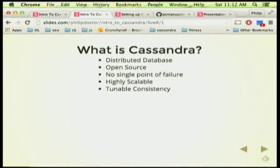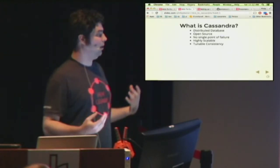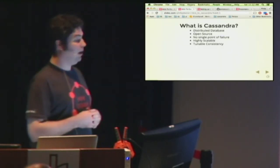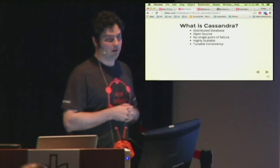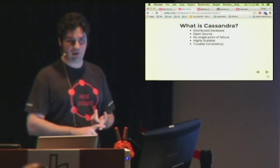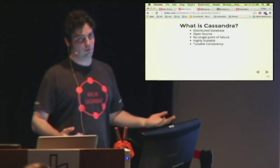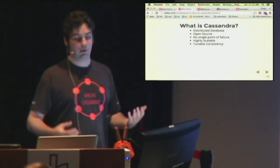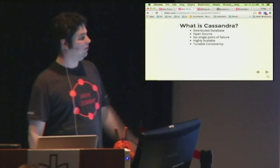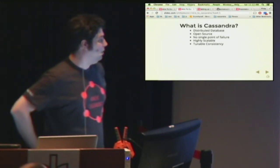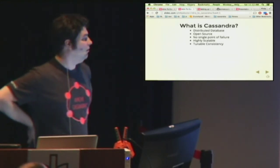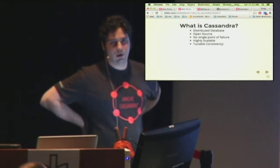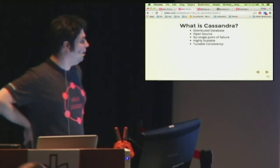So for starters, what is Cassandra? Well, Cassandra is a distributed database — it was built from the ground up to run on many machines rather than just as a single instance on one machine. Cassandra is open source, written primarily in Java, and all the open source goodness that comes along with that is available to you. You can go check out the code base, read the code, and if it doesn't work for your needs exactly, you can always modify the code. Cassandra is built to have no single point of failure.